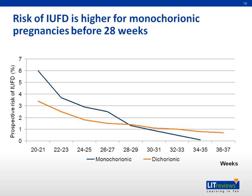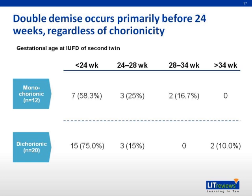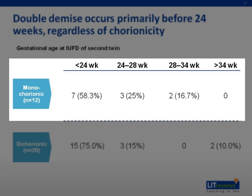This chart provides data supporting the secondary outcome of the study: that double demise occurs primarily before 24 weeks, regardless of chorionicity. Pregnancies with double fetal demise are divided according to the gestational age of the second twin at the time of their demise. In monochorionic pregnancies, 58% of double fetal demise had the second twin's death occur before 24 weeks. In 75% of dichorionic pregnancies with double fetal demise, the intrauterine fetal death of the second twin also occurred before 24 weeks.